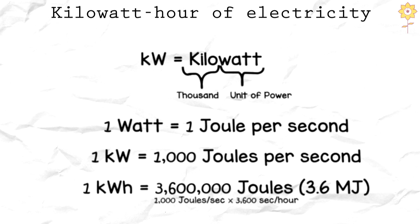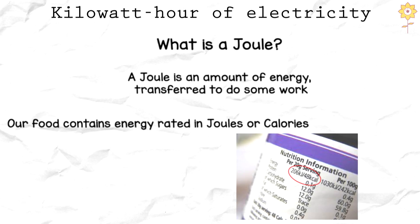A watt is precisely one joule every second, and a kilowatt hour is equivalent to 3.6 megajoules. What exactly is a joule? The amount of energy used to perform work is measured in joules. We ingest food that includes energy measured in calories or joules, which we use to heat and power our bodies.